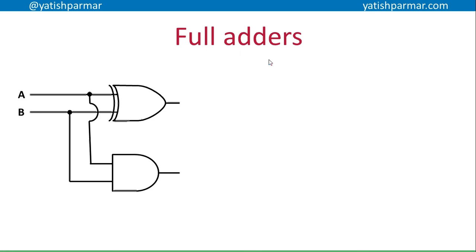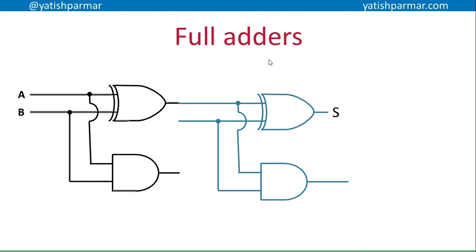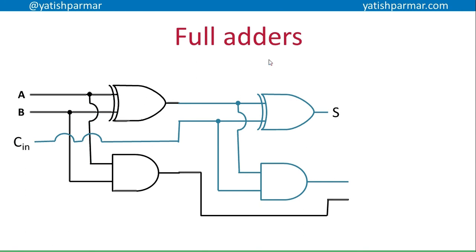What does that look like in terms of logic gates? You have your first half adder, take its output into a second half adder, into which you also add your carry-in as the third input. Then the carry from the first adder is OR'd with the carry from the second adder to give your output carry that goes onwards in the circuit.